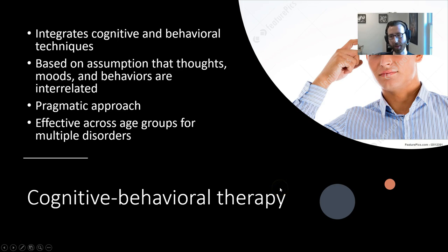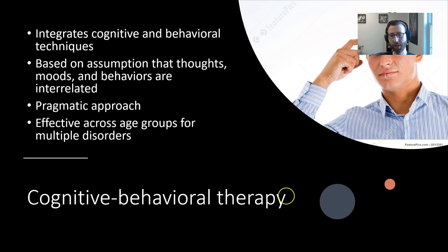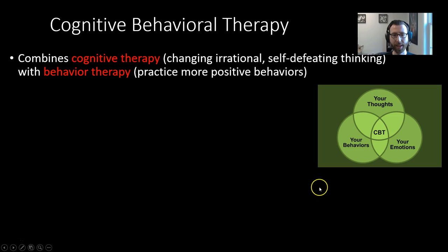CBT is a very effective form of therapy for many people. It works across age groups and for multiple disorders. Another advantage is that it tends to be very goal-directed with more of an endpoint in mind — unlike traditional psychoanalysis, which has no really structured endpoint. CBT represents the intersection of thoughts, emotions, and behaviors: a combination of cognitive therapy, changing irrational self-defeating thoughts, and behavioral therapy, practicing more positive behaviors based on principles of learning theory.